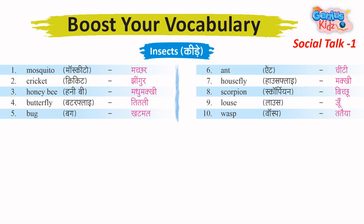5. Bug – Khatmal. 6. Ant – Cheenti. 7. Housefly – Makhi. 8. Scorpion – Bichu. 9. Louse – Juu. 10. Wasp – Tataia.